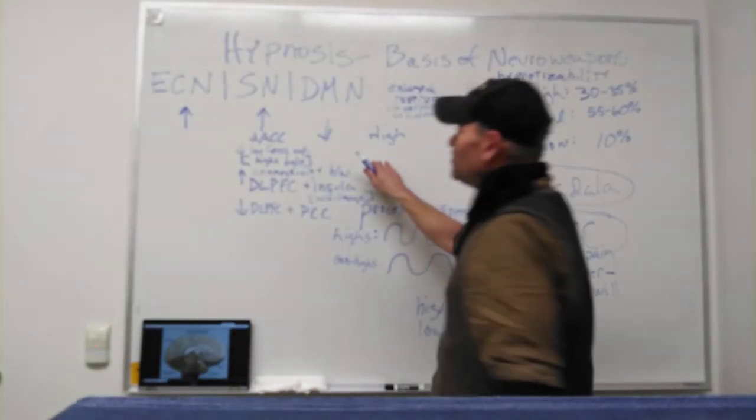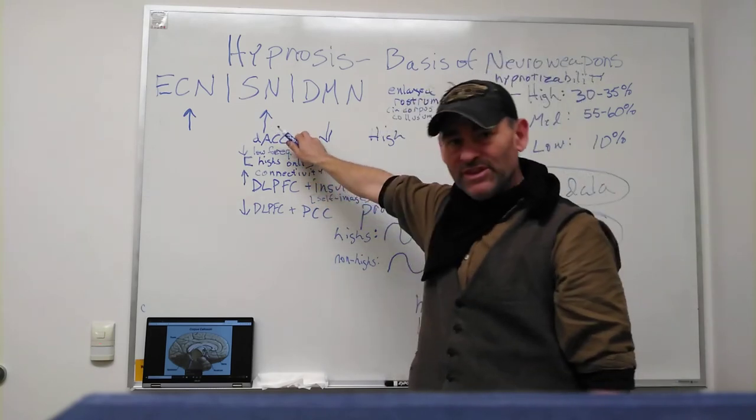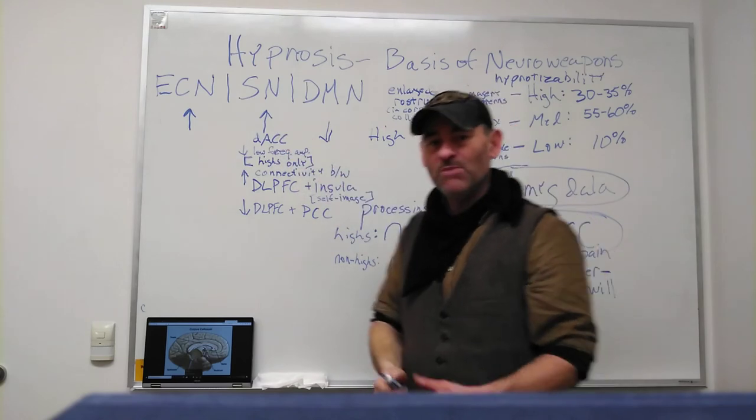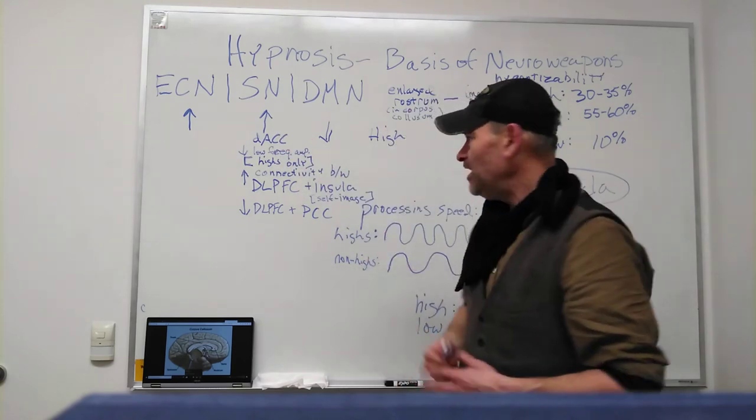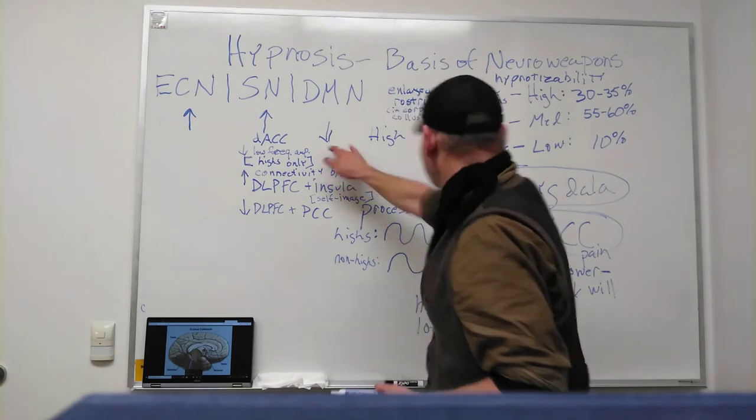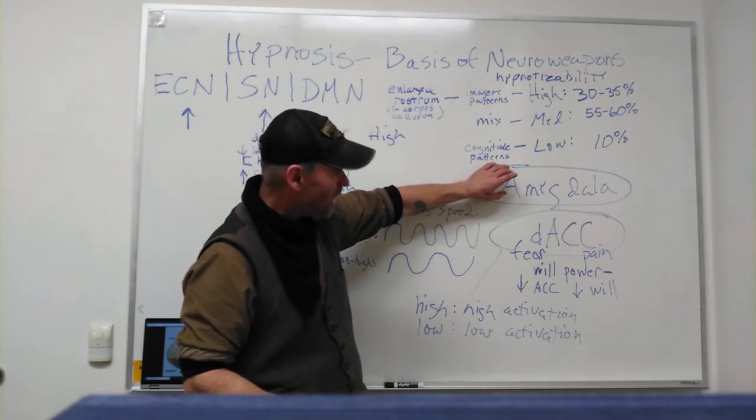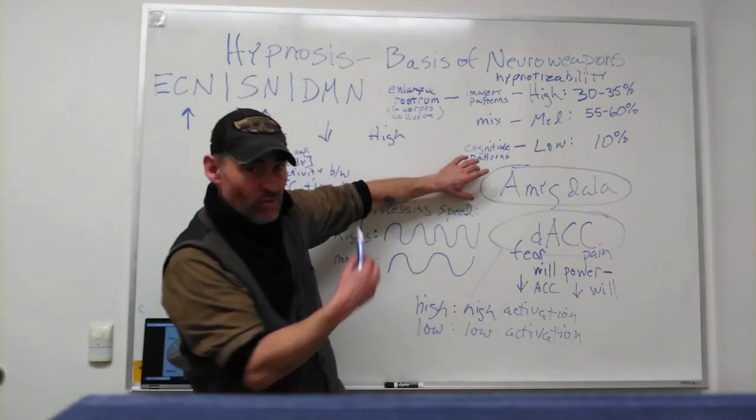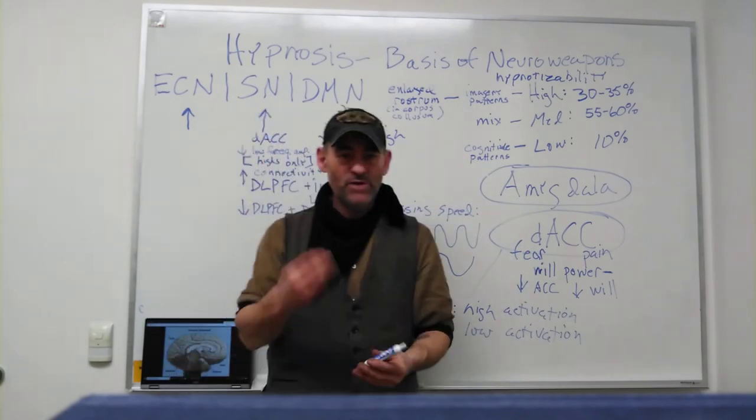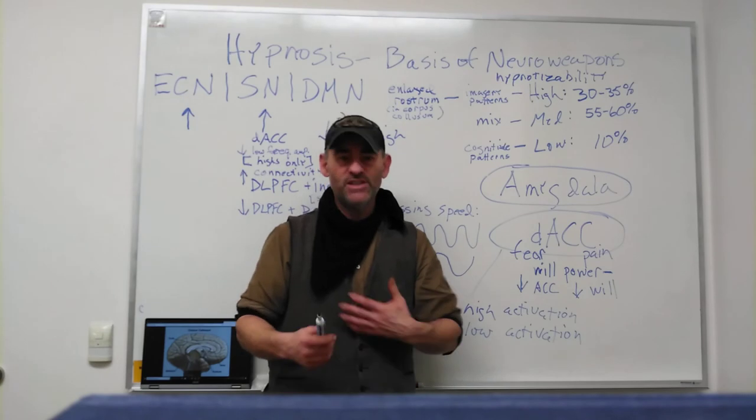One of the things we're going to get to is the role of the anterior cingulate cortex, which is written about by John Norseen as well in his research on thought injection. What's over here is that there is this combination in neuroweapons. The amygdala is a part of our brain which processes fear and anxiety, but it is a very ancient part of the brain.